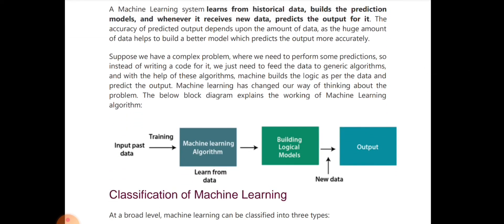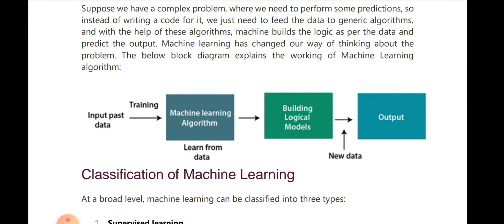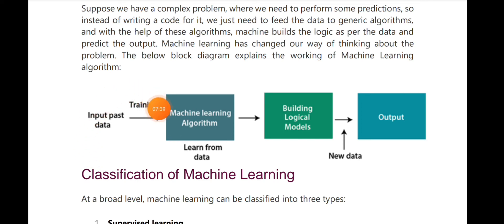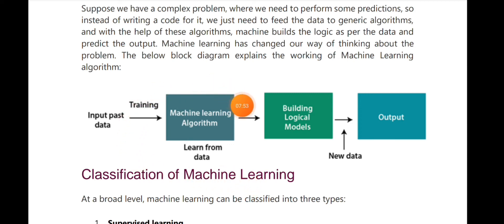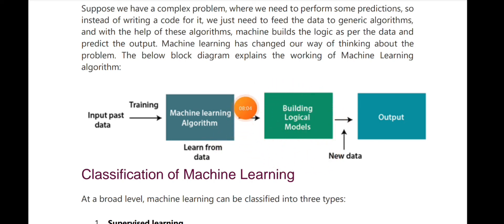Now let's define the ML workflow. We have input data — this is the past data, this is the actual training data. This is fed into the ML algorithm. There are many different types of algorithms. We give this algorithm the training data so it can learn, and the output is a mathematical model.